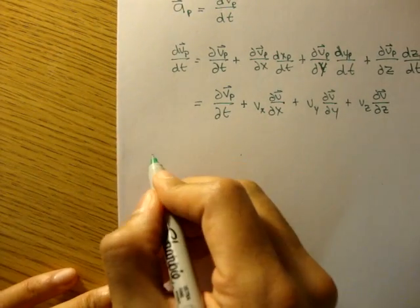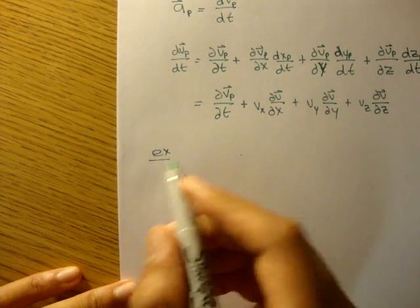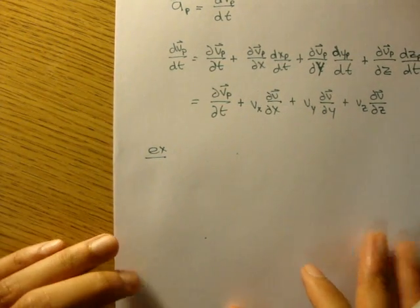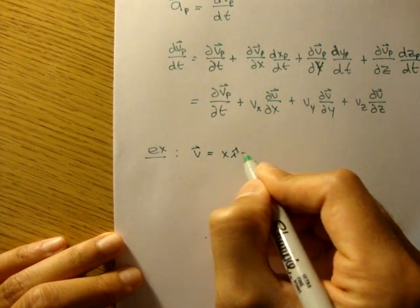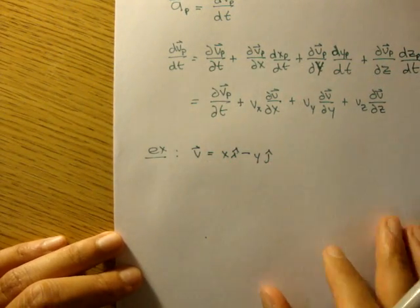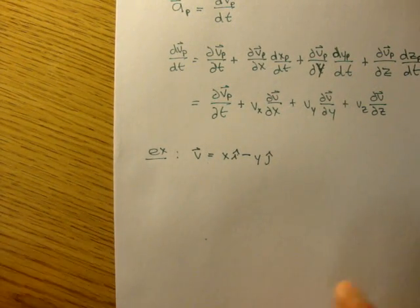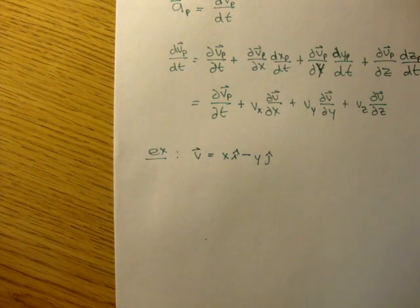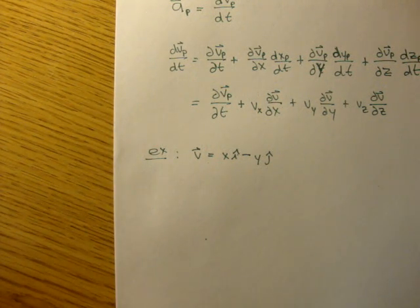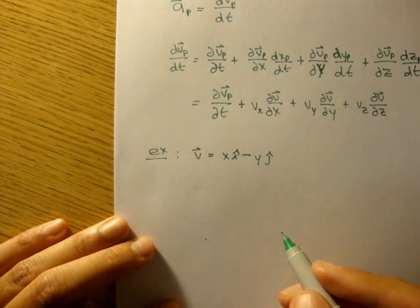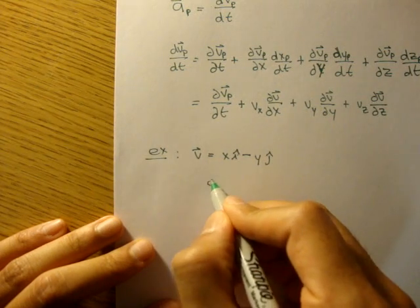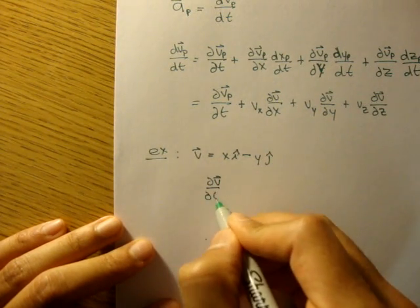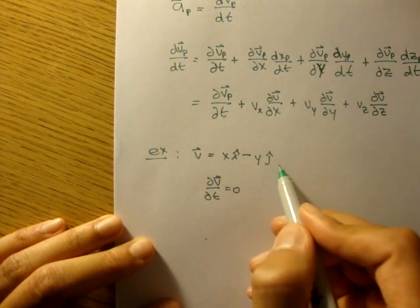Now, a quick example just so you see how these acceleration fields are used. We're given a velocity: v equals xi minus yj — we can forget the units for now. The question is asking us to find the acceleration field of this velocity field. We know the partial of v with respect to t is zero. Why? Because there's no time variable t.